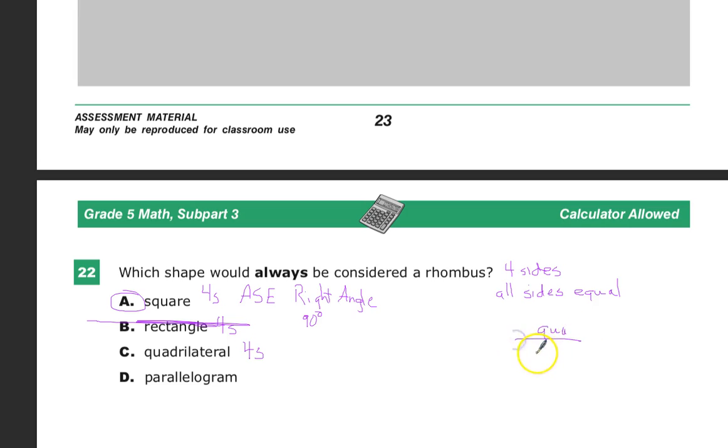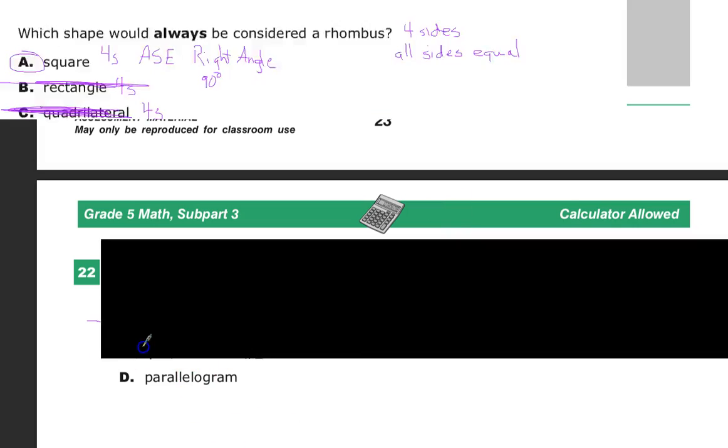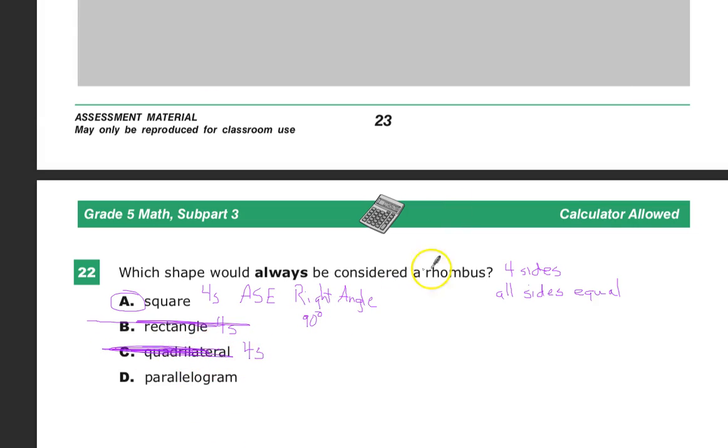And then the quadrilateral is like children or square rectangle, parallelogram, that sort of thing. Trapezoid. So that's out. Not because it doesn't meet some of the requirements of being a rhombus, but it doesn't meet all of them.